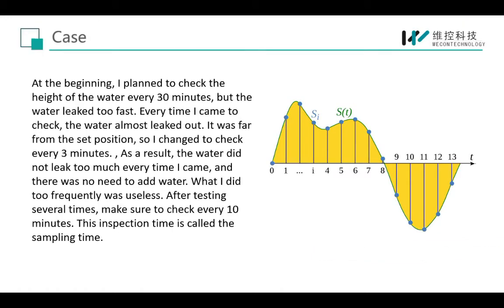At the beginning, I planned to check the height of the water every 30 minutes, but the water leaked too fast — every time I came to check, the water had almost leaked out, far from the set position. So I changed to checking every 3 minutes, but then the water hadn't leaked much and there was no need to add water — checking too frequently was useless. After testing many times, I settled on checking every 10 minutes. This inspection interval is called the sampling cycle.